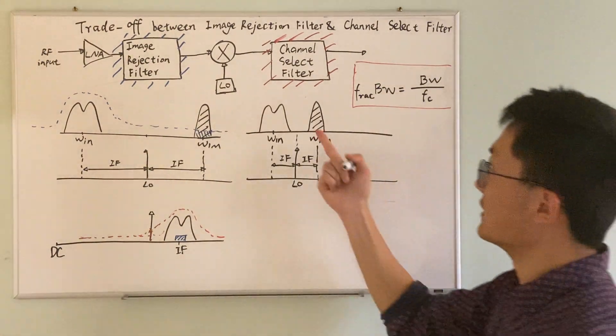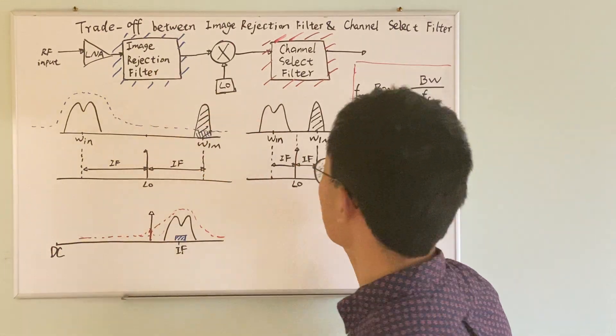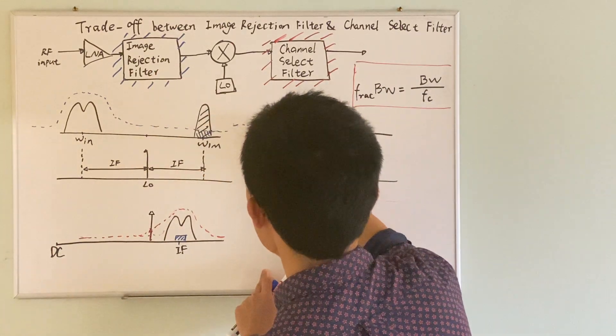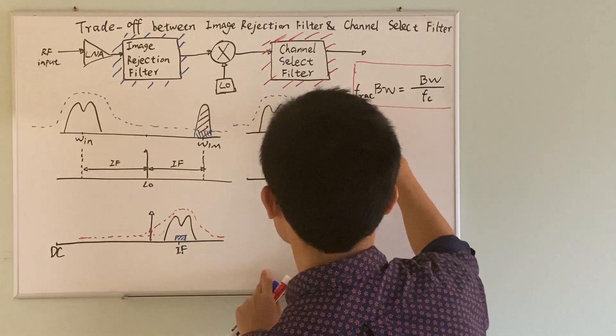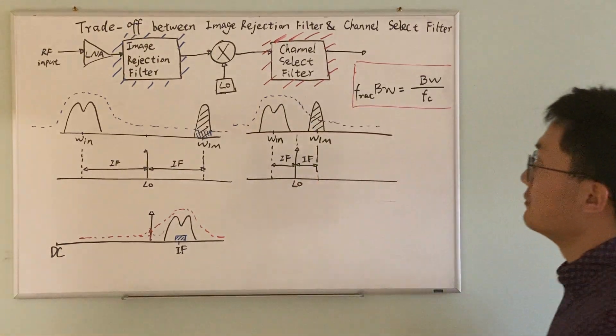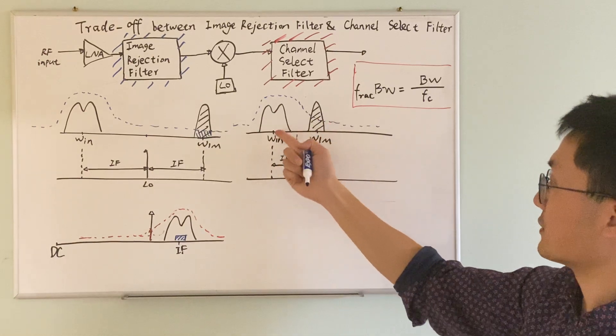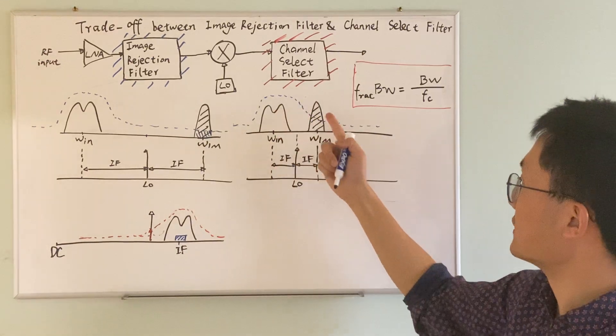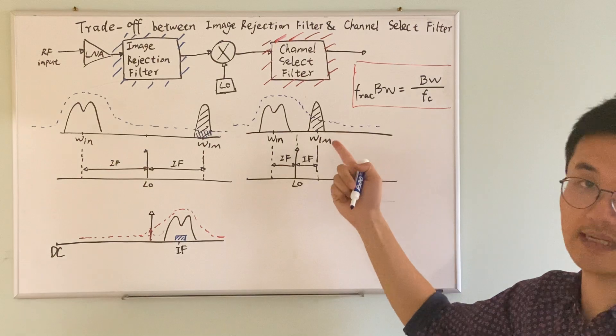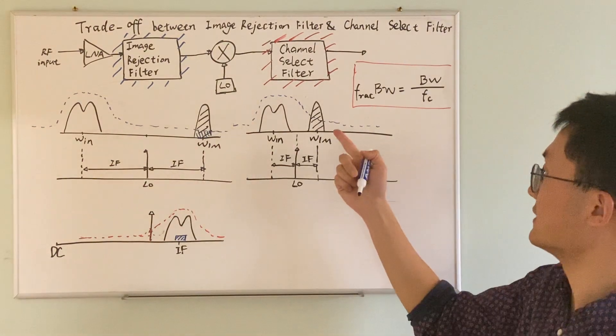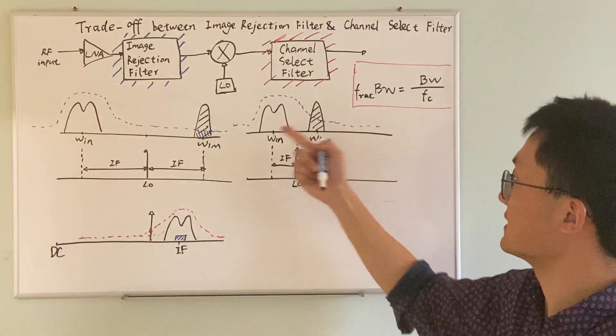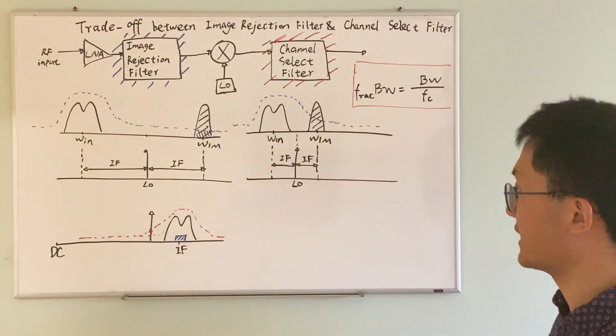Similarly, when it goes through the image rejection filter, because the image and the signal are so close to each other, the filter partially suppresses the image. However, the suppression is not as significant as compared to the first scenario.